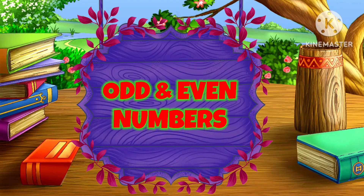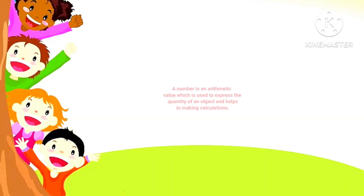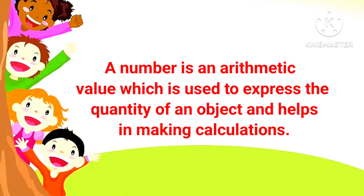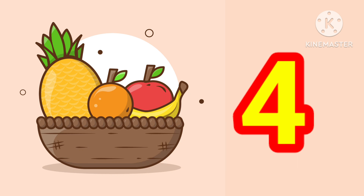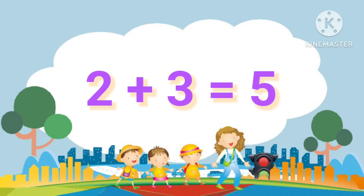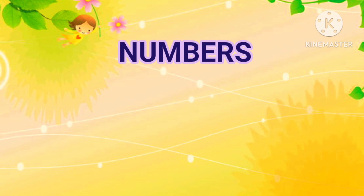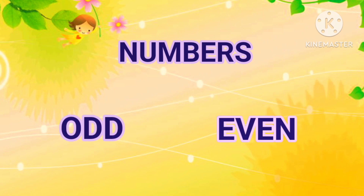In this video, we will study about odd and even numbers. A number is an arithmetic value which is used to express the quantity of an object. For example, there are 4 fruits in a basket, and it helps in making calculations. The numbers can be classified into odd and even numbers.